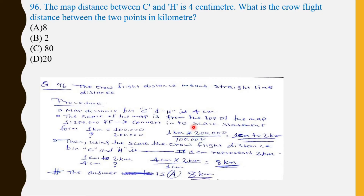The map distance between C to H is four centimeters. The scale of the map is given as a representative fraction of one to two hundred thousand. First, we will convert this RF into scale statement form.